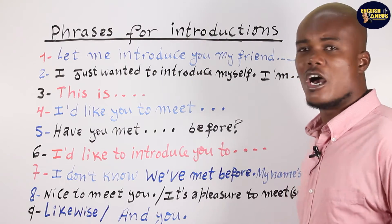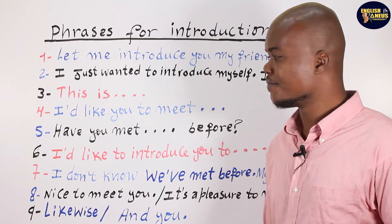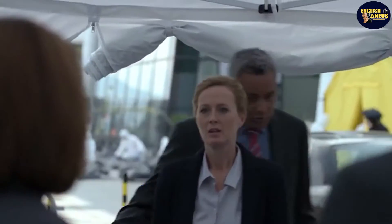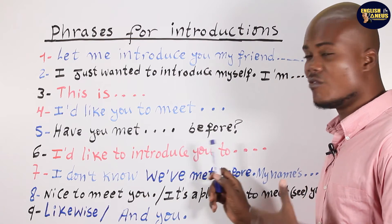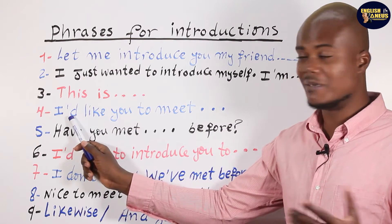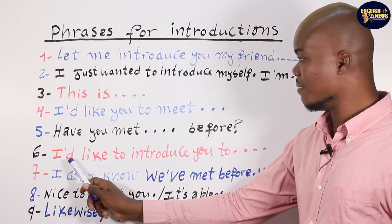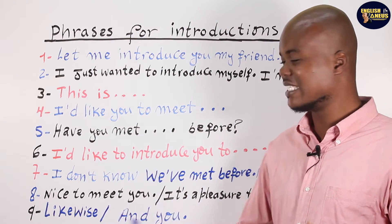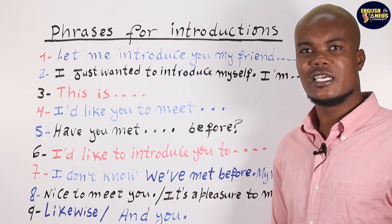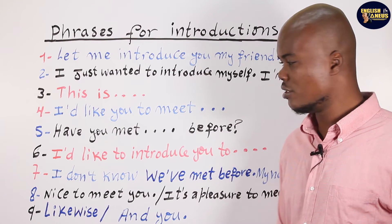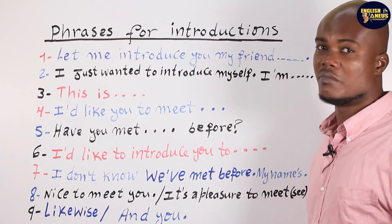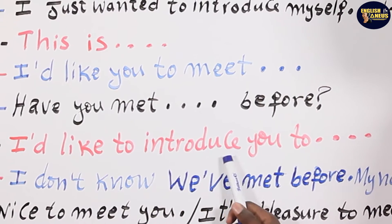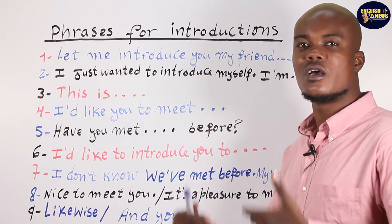Let's see another sentence on how to introduce someone to someone else. You can say: 'I'd like to introduce you to Maria.' That's almost the same as before — 'I'd like you to meet' — but here you say 'I'd like to introduce you to.' For example: 'Josje, I'd like to introduce you to Maria.' 'Daniel, I'd like to introduce you to Pedro.' I'd like to introduce you to [name].